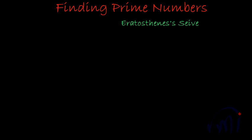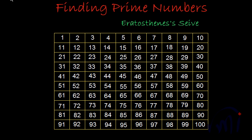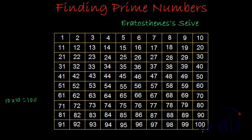Let me first note down the numbers from 1 to 100. We will start from the first row and go from left to right, checking the divisibility of all the numbers till only 10, because the square root of 100 is 10 — 10 multiplied by 10 gives us 100. Since 10 multiplied by 10 equals 100, which is the biggest number on this grid, we only need to check divisibility by numbers up to 10.